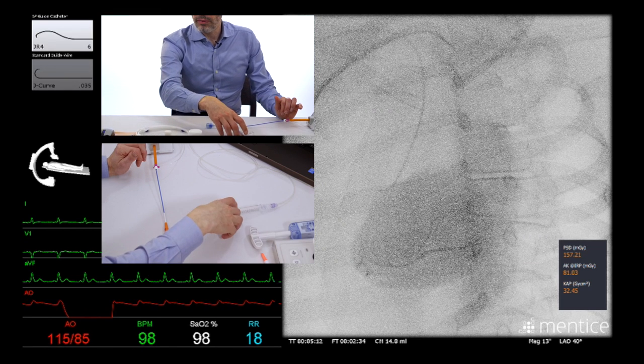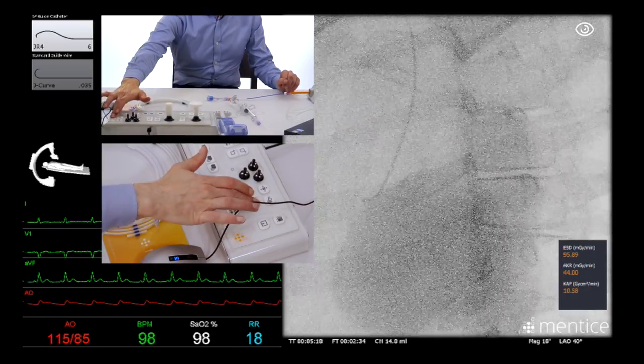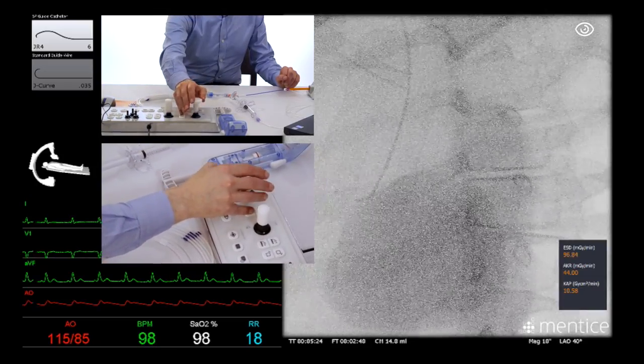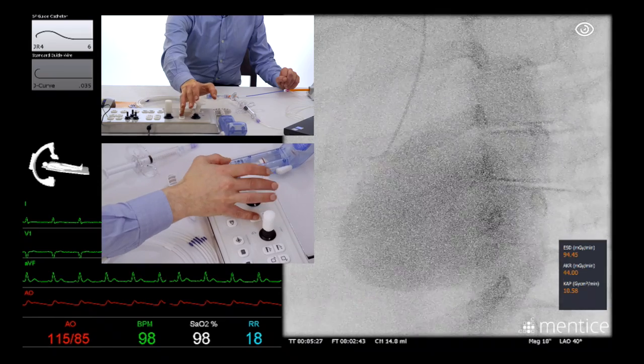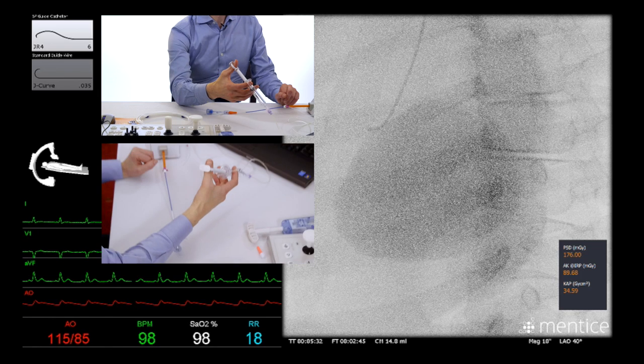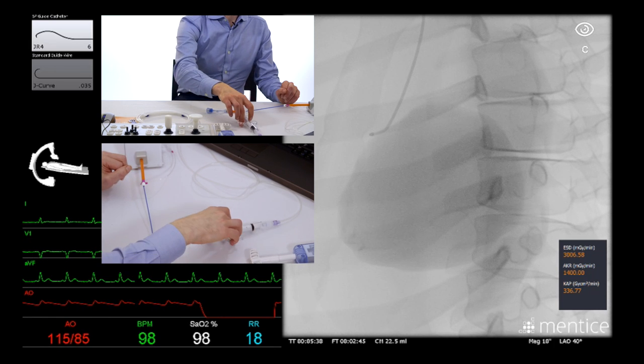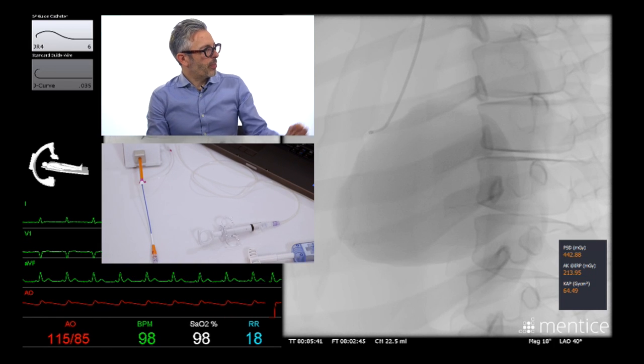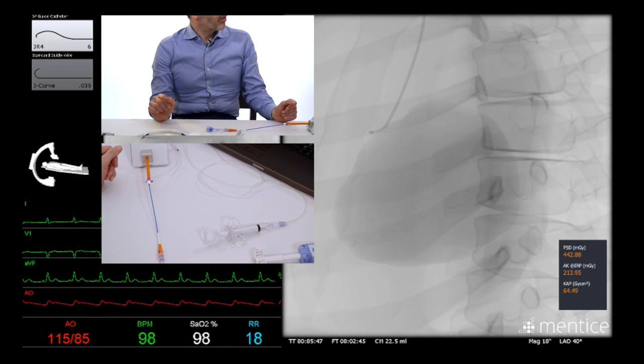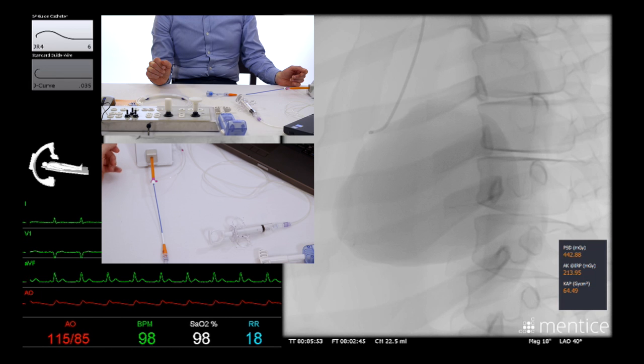Let's take an angiogram in that view. I'm going to mag up one size and change our table position a little bit, just center up on the screen. Now we'll take our cine here and you can see a roadmap appears on the left of the screen. We can see from the picture that in this mid-right coronary artery we have a severe area of stenosis and that's our target for treatment today.